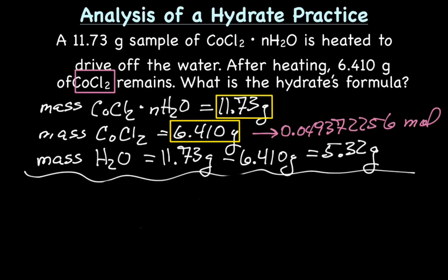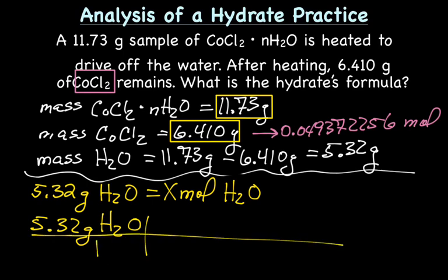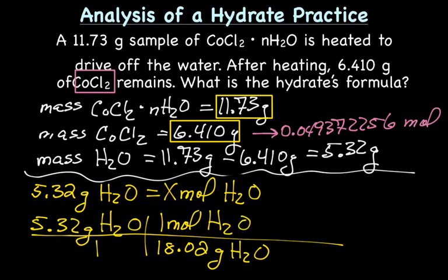For water, we have 5.32 grams of water equals x moles. Again, set up our grid. We'll start with 5.32 grams of water over 1. And bottom, we need to put the molar mass of water, which is adding up 2 hydrogens and an oxygen, giving us 18.02 grams. And the top will have 1 mole of water. These cross out.